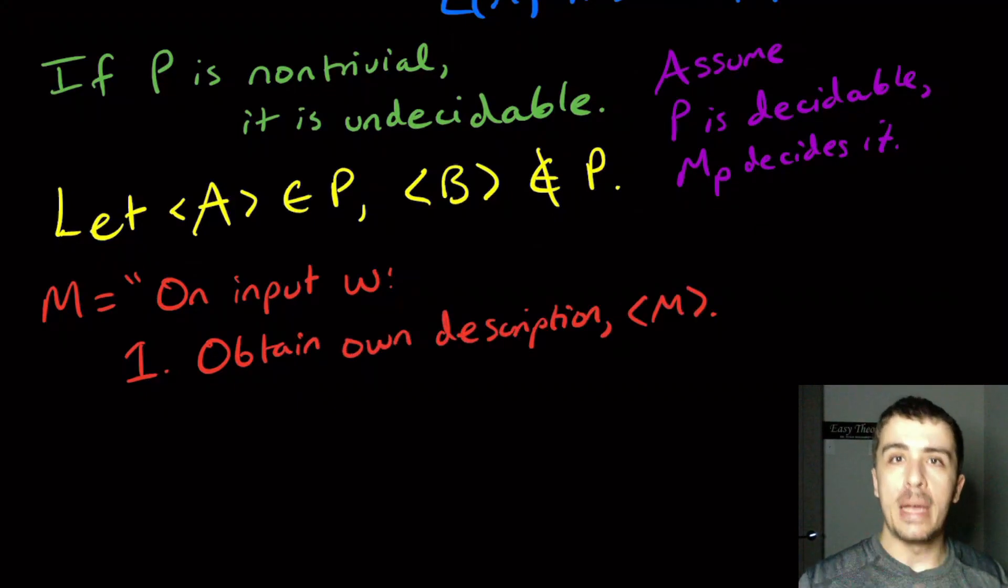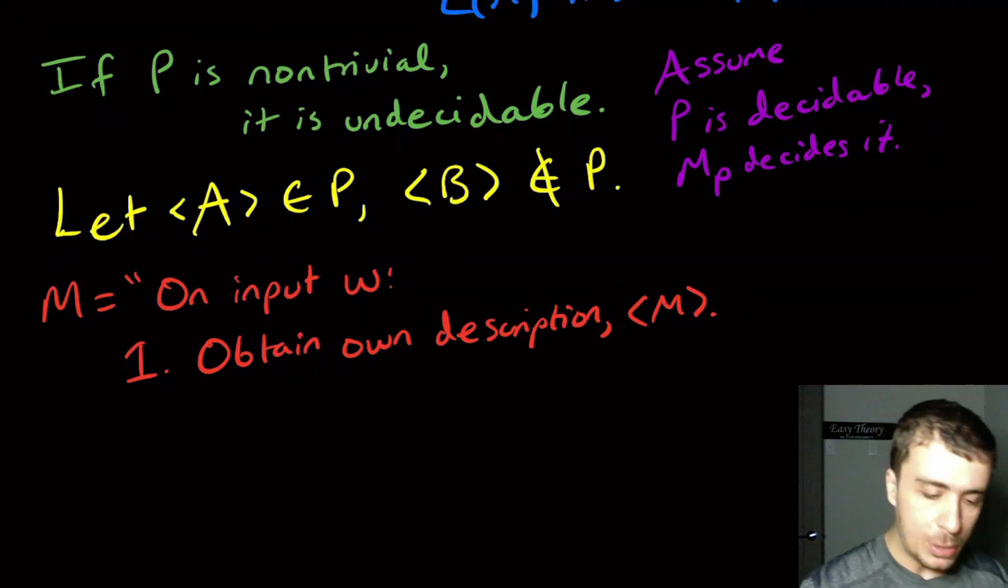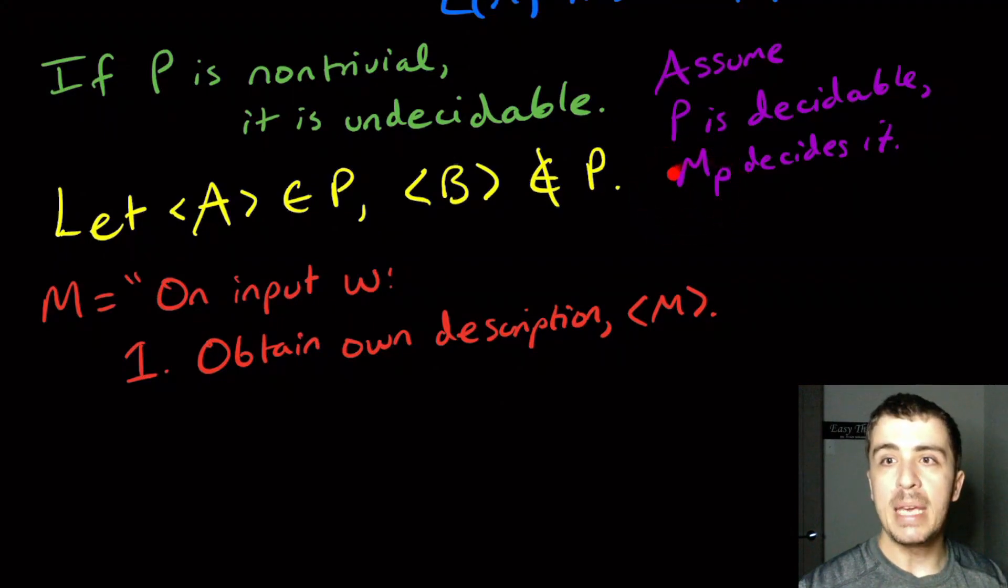Now we obtained our own description. Let's do something useful with it. This supposed decider MP can figure out whether the Turing machine has this specific property.